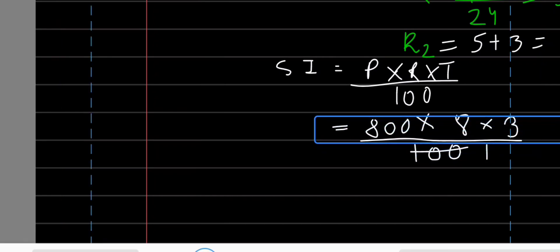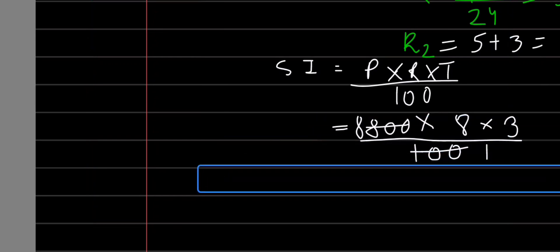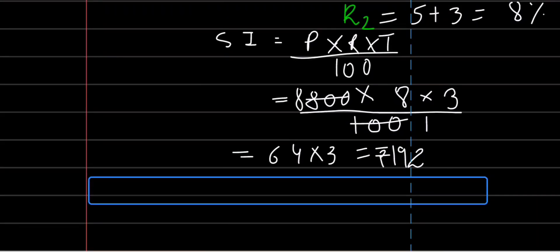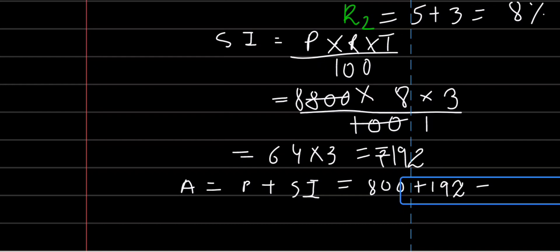Calculating: 800 into 8 into 3 divided by 100. 8 into 8 is 64, and 64 into 3 is 192 rupees. So the new simple interest is 192 rupees. Therefore, the amount equals 800 plus 192, which gives the final answer of 992 rupees.